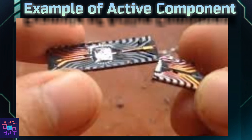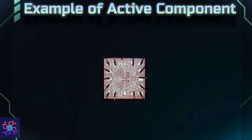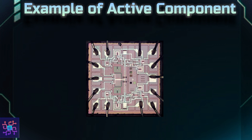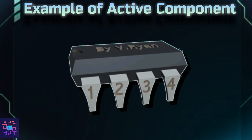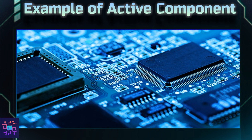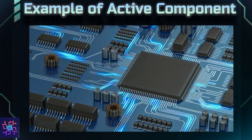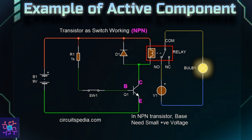If you relate the points I mentioned with IC, you will understand the purpose of active components. ICs are used to process the signal — they drive the logic. As I said, active components are the ones which control the flow of current.